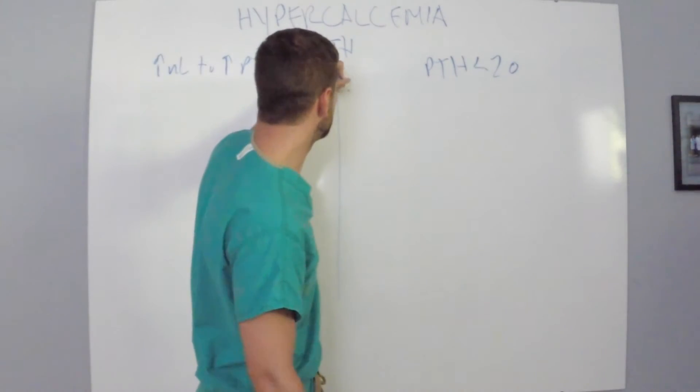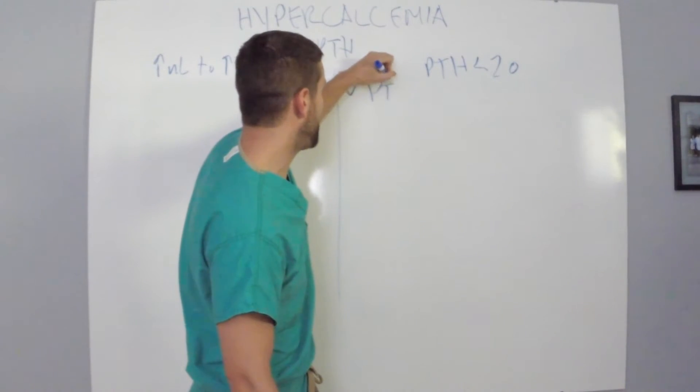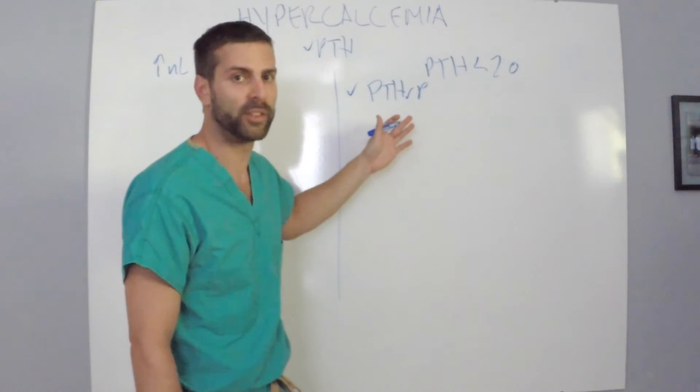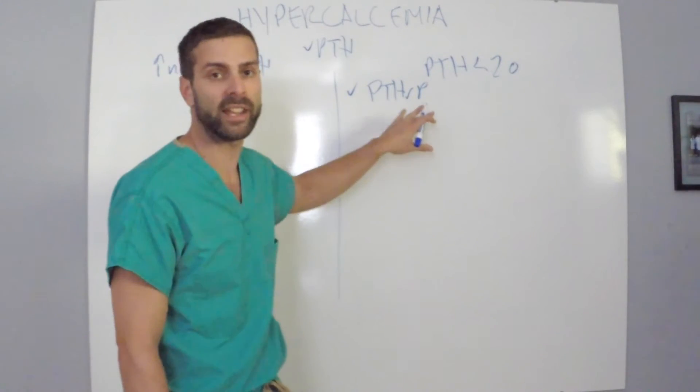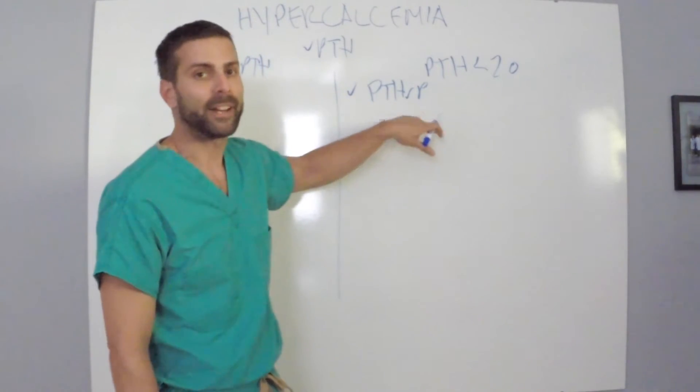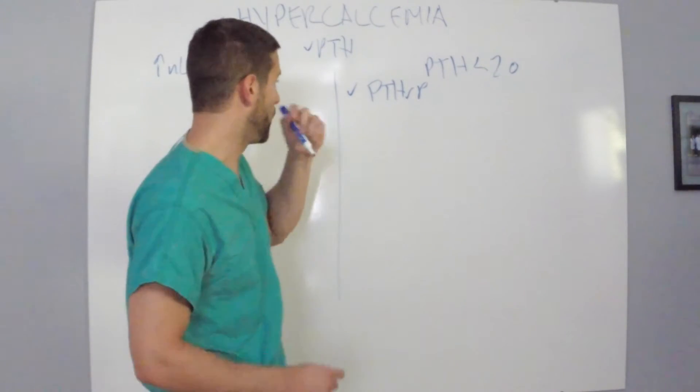So the first thing you would like to check is for somebody to have a PTH related peptide or protein. I don't know which one of the two it is because depending on the literature that you read is where you see this. It's where you see whether it's defined as being a peptide or a protein. So the differential for this gets a little bit tricky.